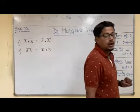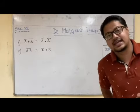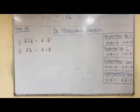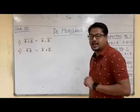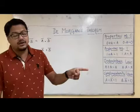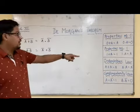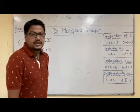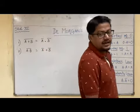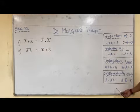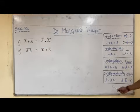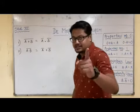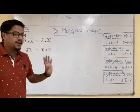I will repeat once more. Properties of 0: 0 plus A is A, 0 dot A is 0. Properties of 1: 1 plus A is 1, and 1 dot A is A. Then comes the Idempotence law: A plus A is A, A dot A is A. And finally complementarity law: A plus A̅ equals 1, A dot A̅ equals 0.